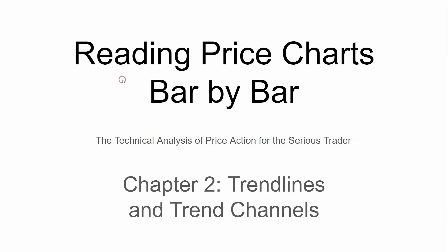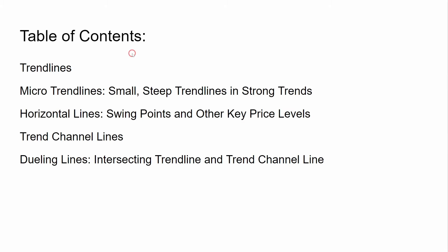We do a summary of chapter two: 'Reading Price Charts Bar by Bar - The Technical Analysis of Price Action for the Serious Trader.' Chapter two covers trend lines and trend channels. Table of contents: trend lines, micro trend lines, small steep trend lines and strong trends, horizontal lines, swing points and other key price levels, trend channel lines, and finally dual lines intersecting trend lines and trend channel lines.